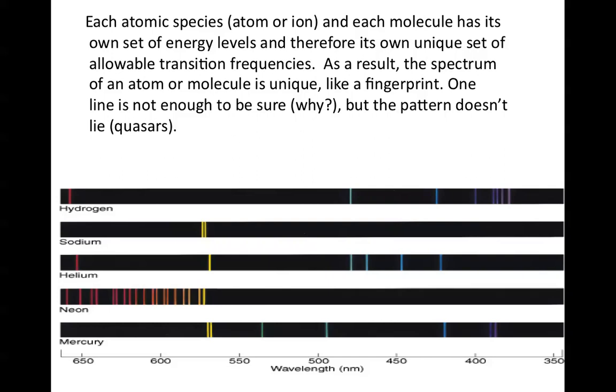Quasars, which were discovered in the 1960s, are objects that are extremely far away from us and appear to be moving away from us very rapidly, and this rapid motion was recognized because the pattern of hydrogen lines was very clear in the spectra. They were just at very much longer wavelengths than they would be in objects that were at rest.